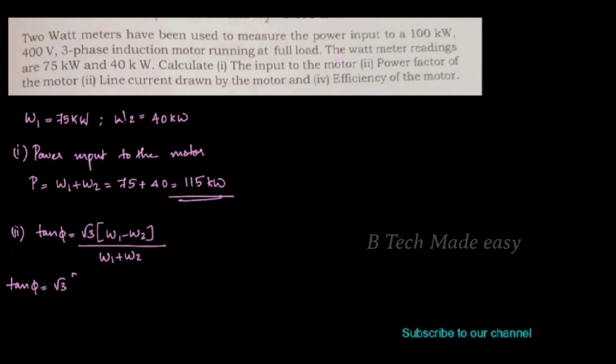Tan φ equals root 3 times 75 minus 40 divided by 75 plus 40. The result of tan φ is 0.527. φ is equal to tan inverse 0.527. The result of tan inverse 0.527 is 27.79 degrees.